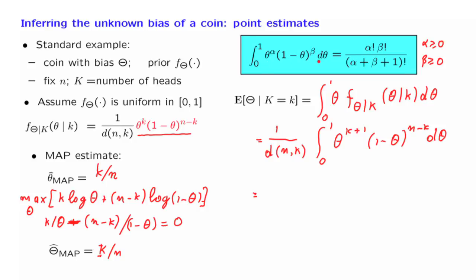We will just take it as a fact that comes to us from calculus. And now, let us apply this formula. d of nk is equal to the integral of this expression, which is of this form, with alpha equal to k and beta equal to n minus k. So, d of nk takes the form alpha is k, beta equal to n minus k, and then in the denominator, we have the sum of the two indices plus 1, so it's going to be k plus n minus k. That gives us n, and then there is a plus 1.